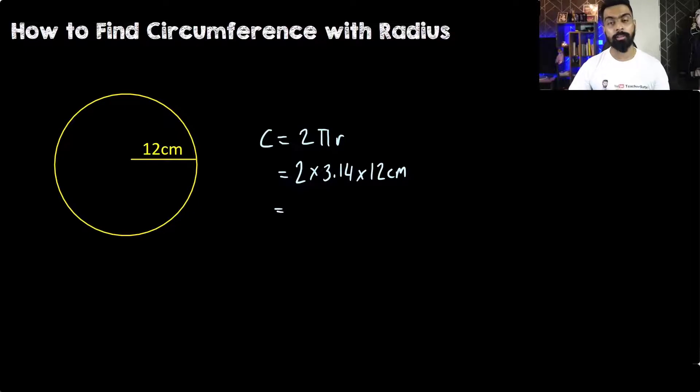In the multiplication, you can do whichever way you want. You can do 2 multiplied by 12 and then multiplied by 3.14, or you can do it whichever way you want. But what I'm going to do is take 2 multiplied by 3.14, which is 6.28, and multiply it with 12 cm. If we use the help of a calculator, we should get 75.36 cm.